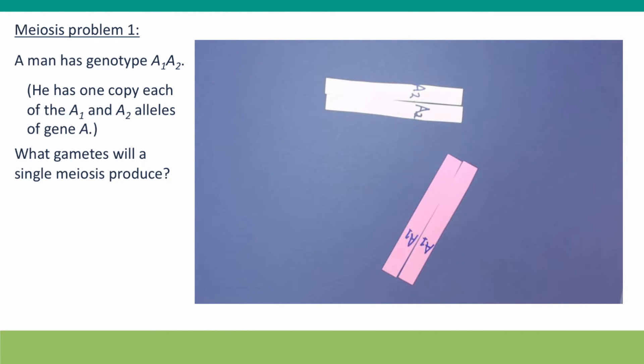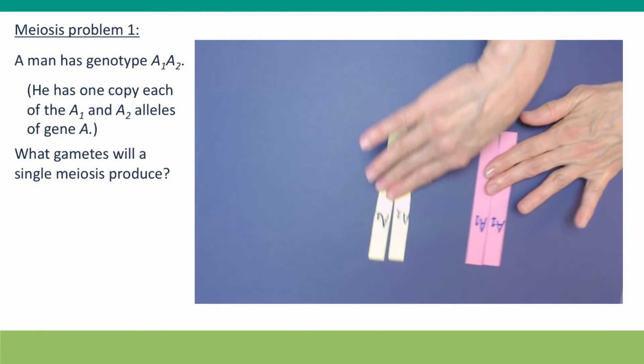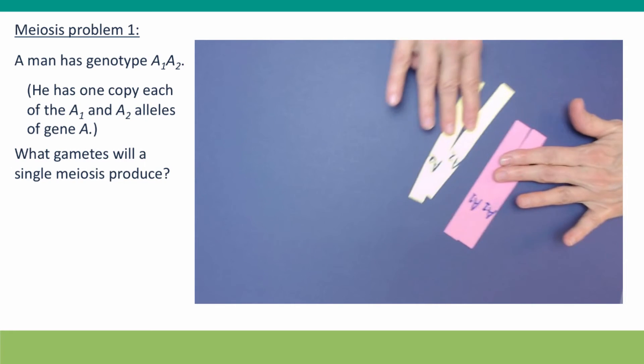But unlike mitosis, the next step isn't attachment of the spindles. Instead, these homologues have to find each other and pair up.